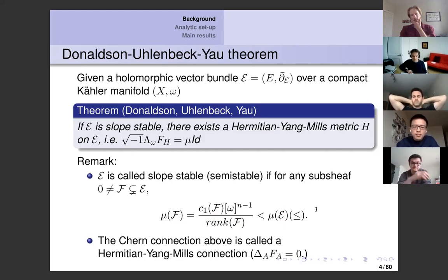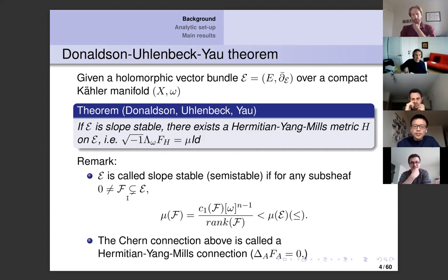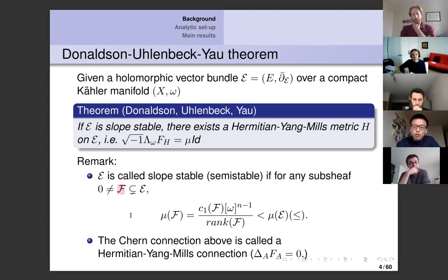Q: What is the first Chern class of a sheaf? A: Since the sheaf E is a vector bundle outside a codimension-two sub-variety, you can define a determinant line bundle there, and one can show this determinant extends to be defined over the whole space, giving a genuine line bundle. We define the first Chern class to be that one.